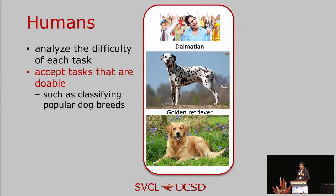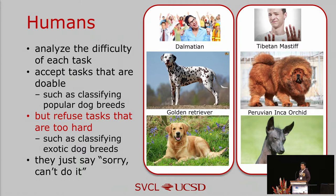For example, most people are willing to classify a Dalmatian or a golden retriever — they will say 'yes, it's easy, I can do it.' But when facing hard tasks, they are willing to refuse. For example, if asked to distinguish which of two very similar dogs is which, most people will say 'sorry, I can't do it.'